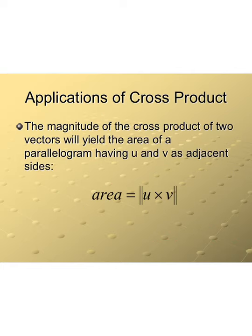One of the main applications of the cross product is that the magnitude of the cross product of two vectors yields the area of the parallelogram that has u and v as adjacent sides. Let's look at an example.